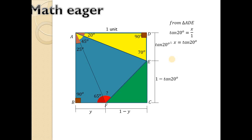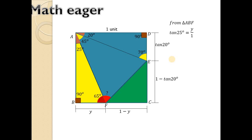Similarly, from triangle ABF, tan(25°) equals Y upon 1, where P is Y and B is AB, which is also 1 unit. So we get Y equals tan(25°). Replacing Y by tan(25°).